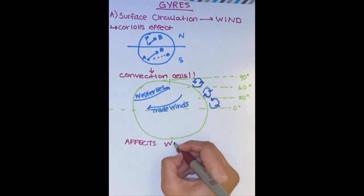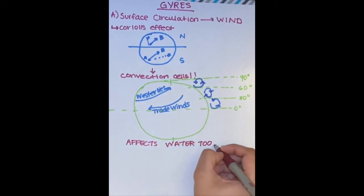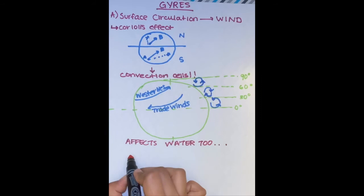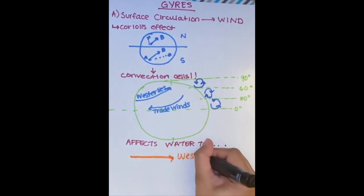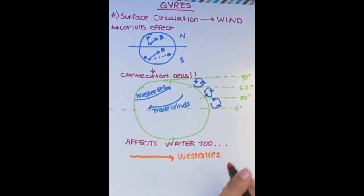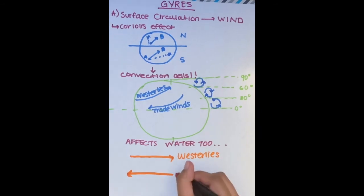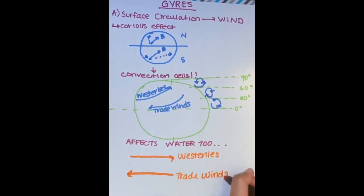The Coriolis effect also influences water movements and now we can finally learn about how gyres are created. With the westerlies blowing in the opposite direction of the trade winds, water begins to mound in a large circle in the middle.